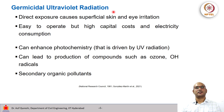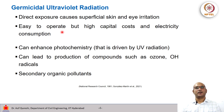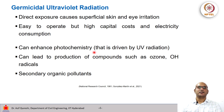The issues with germicidal UV radiation lamps are that direct exposure to humans may cause skin and eye irritation. These lamps are easy to operate since all we need to do is turn on the light, but they have high capital cost and sometimes high electricity consumption. Another issue is that UV lamps can enhance indoor air photochemistry — reactions driven by UV radiation — which can lead to production of ozone and hydroxyl radicals, which can produce secondary organic pollutants.